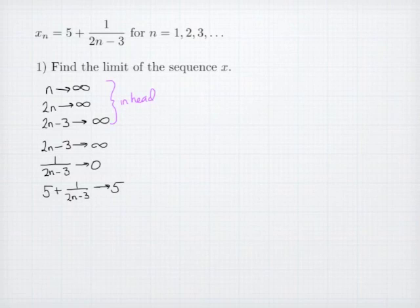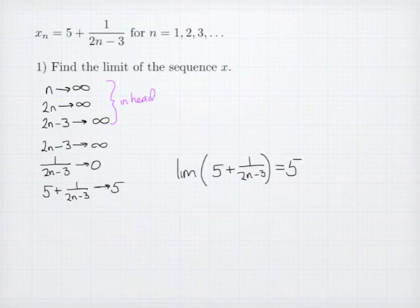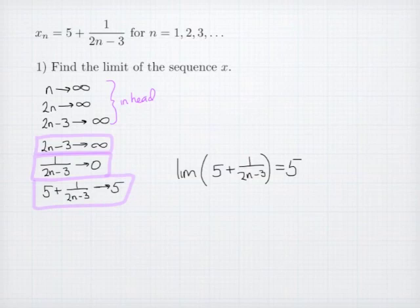If the question is simply to find the limit of the sequence, our task is simply to show that the limit of our sequence, 5 plus 1 over the quantity 2n-3, has a value of 5. The work should include showing that you've correctly recognized that the denominator goes to infinity, the reciprocal goes to 0, so that 5 plus a sequence going to 0 goes to 5.